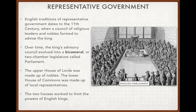Over time, this king's advisory council evolved into a bicameral form of legislature. You need to know what a bicameral legislature means — it means there are two chambers. The prefix 'bi' means two. We have that in the United States: the Senate and the House of Representatives. Many democracies around the world do not have that. We took after the English, who basically invented the modern bicameral legislature.